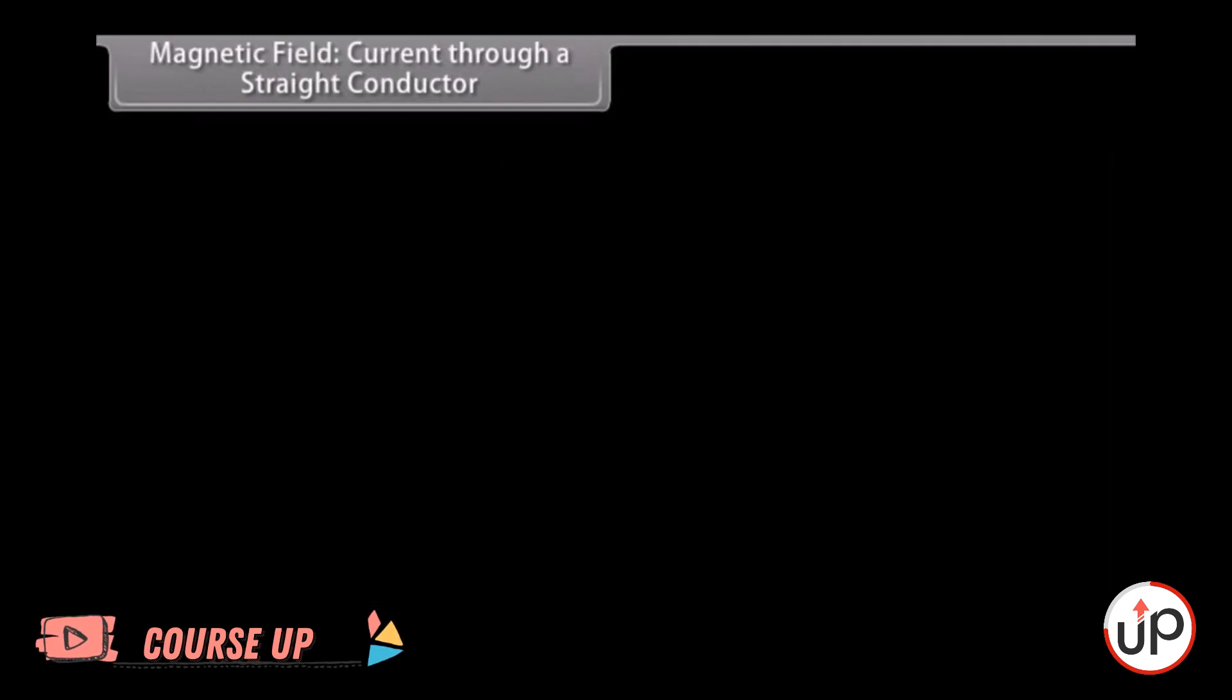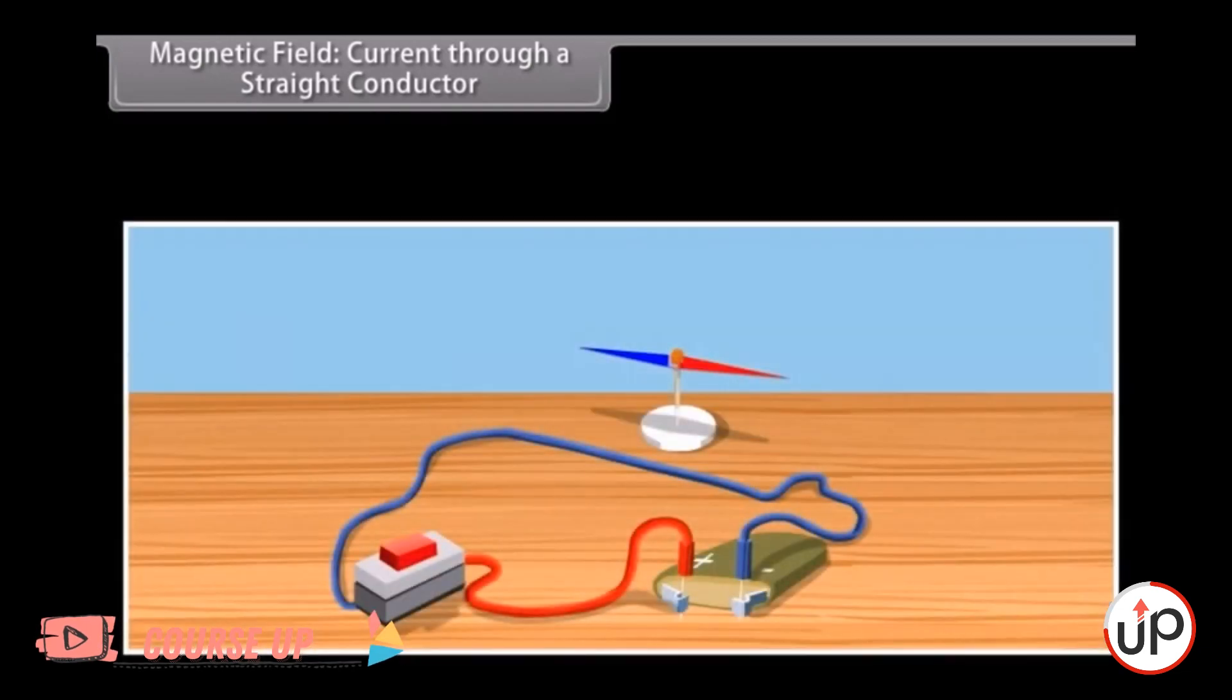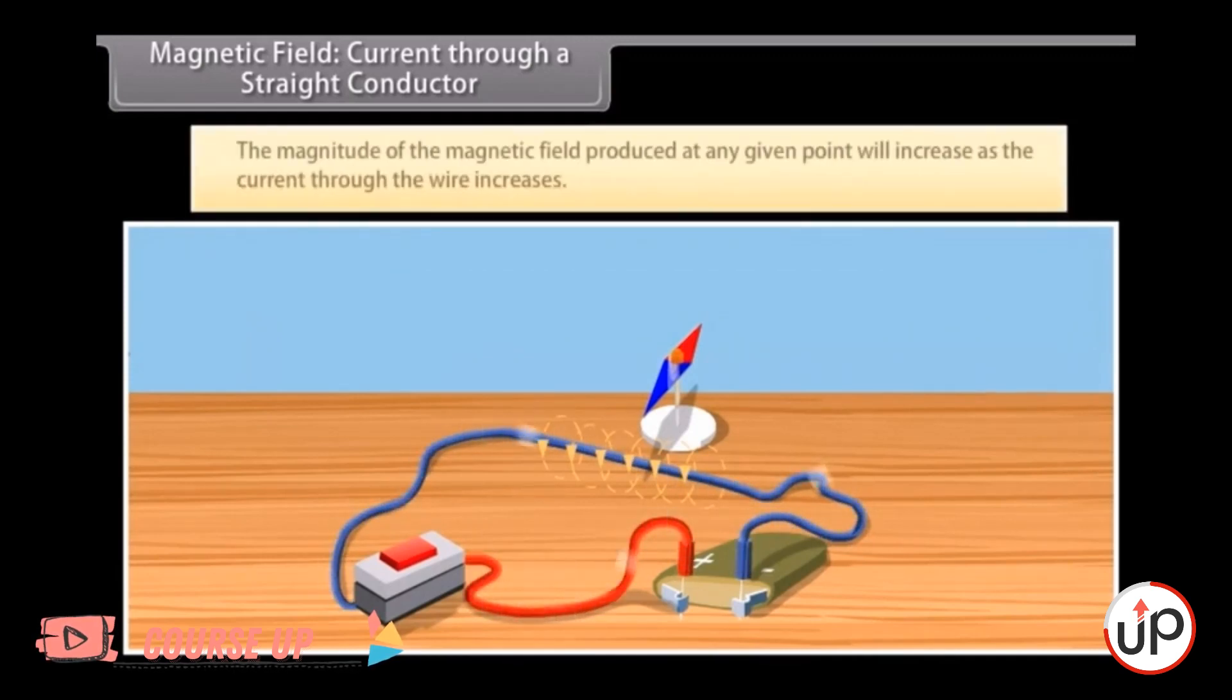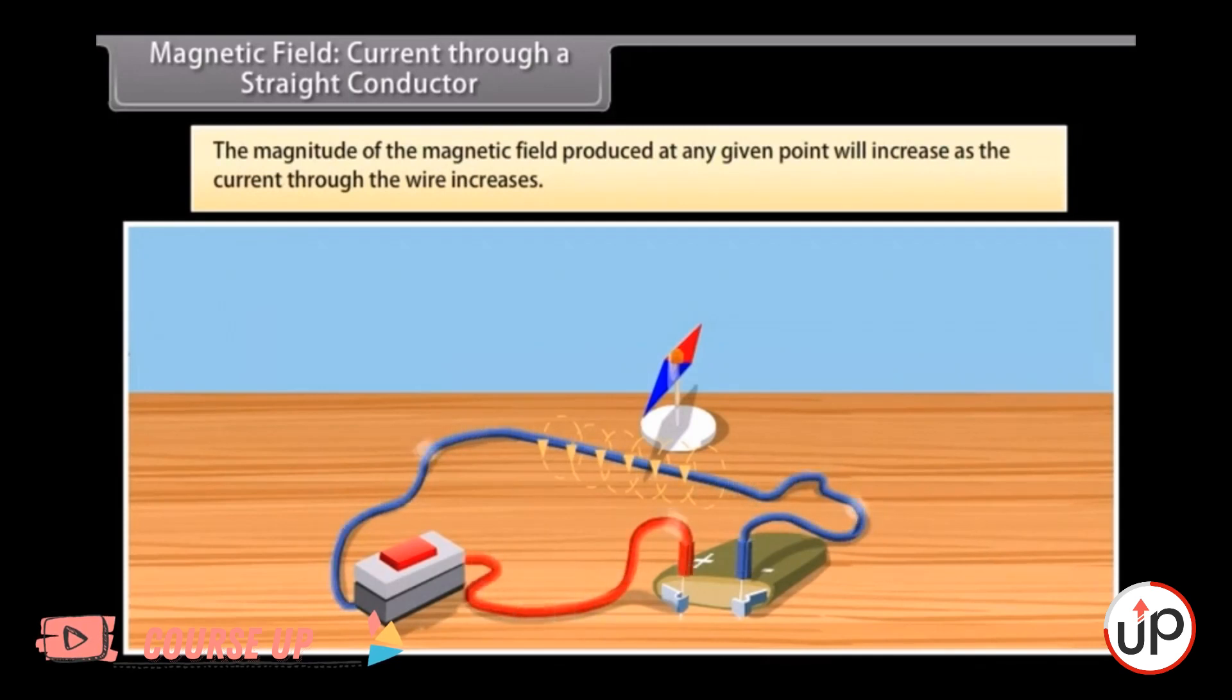Magnetic field current through a straight conductor. As you have seen earlier, let us see what happens when we change the current that is passing through the wire. The effect on the compass also varies. So if you increase the current, the deflection of the needle of compass will increase. From this we know that the magnitude of the magnetic field produced at any given point will increase as the current through the wire increases.